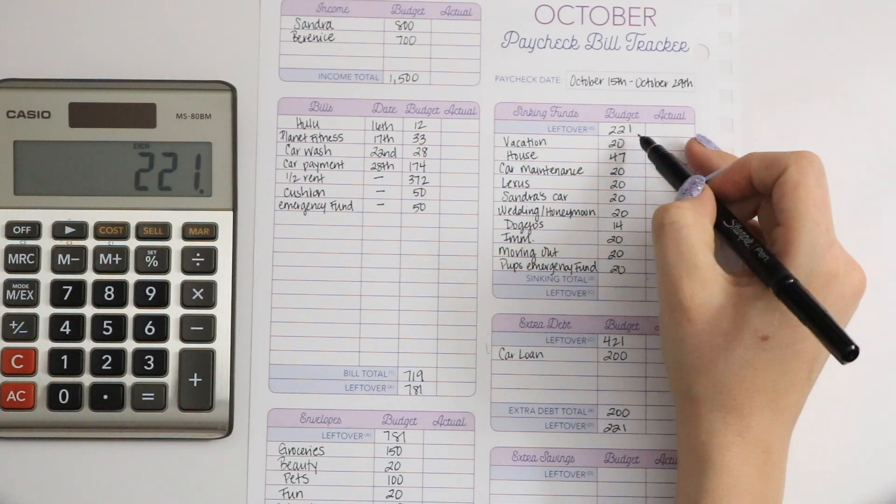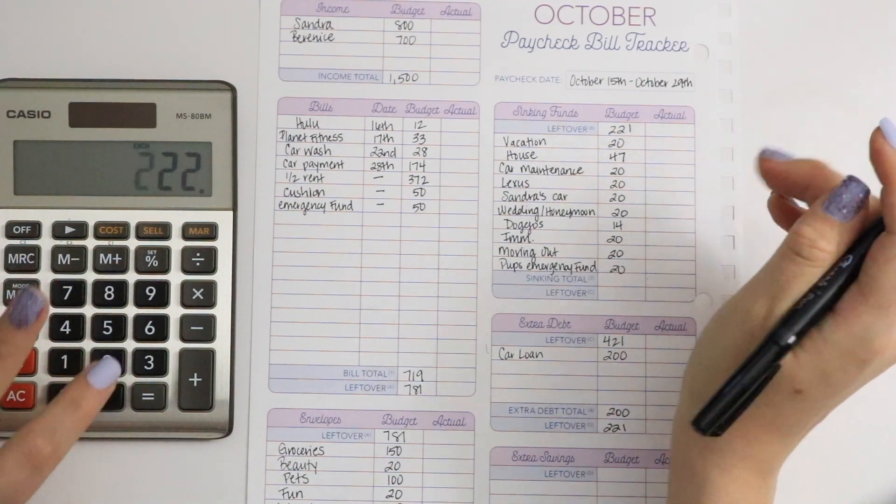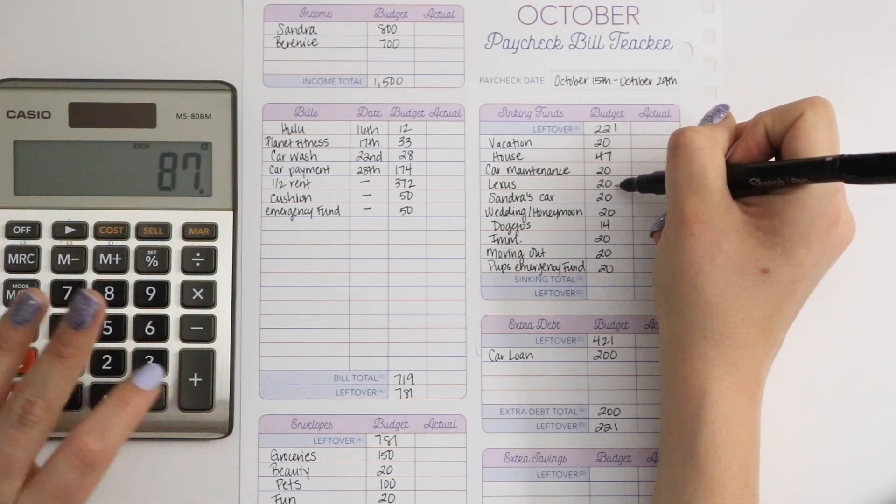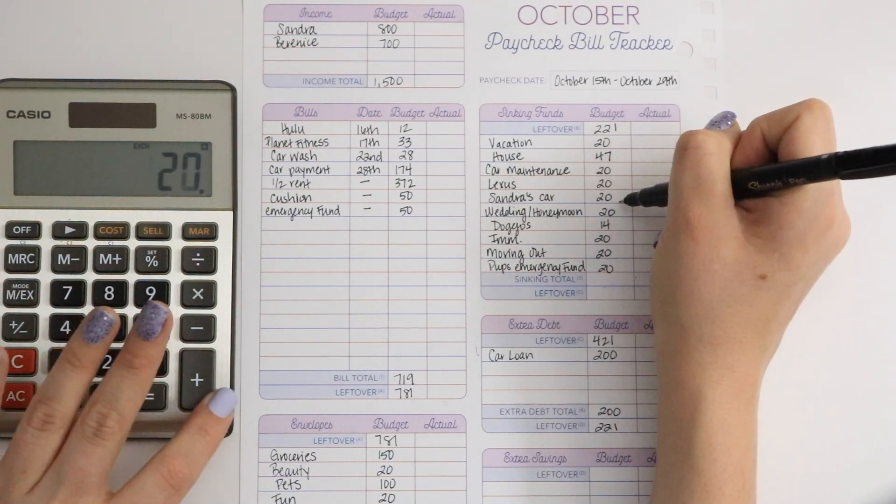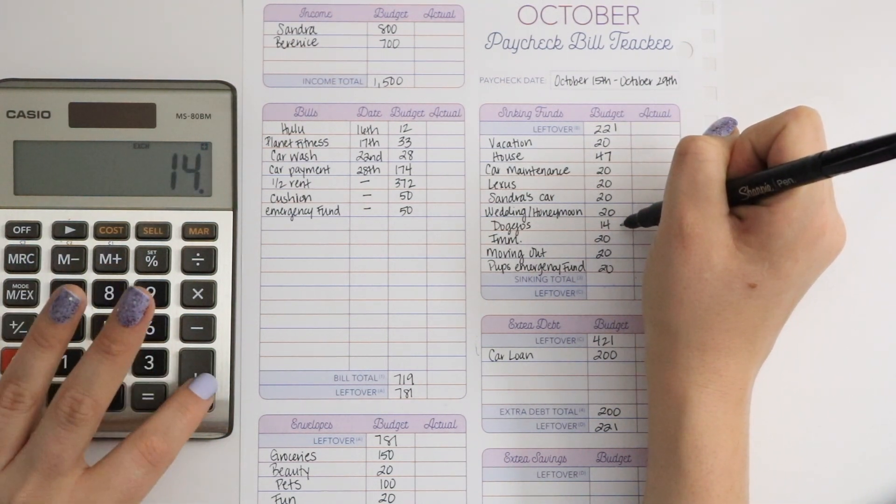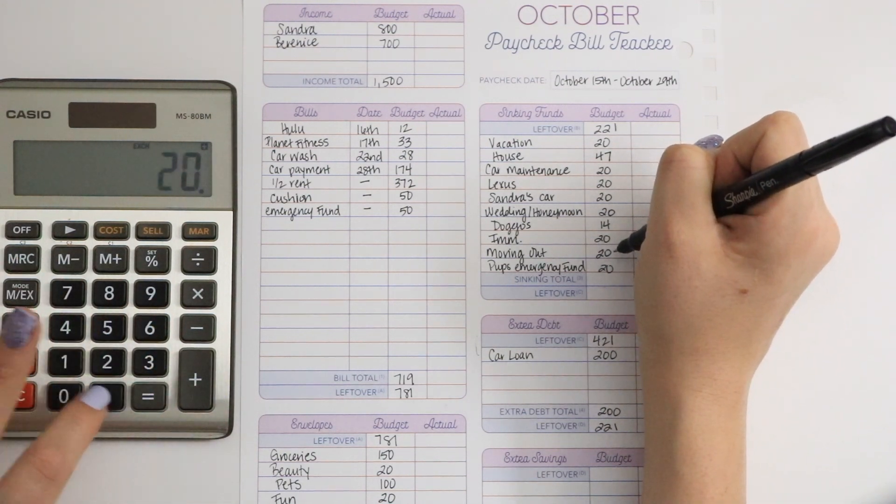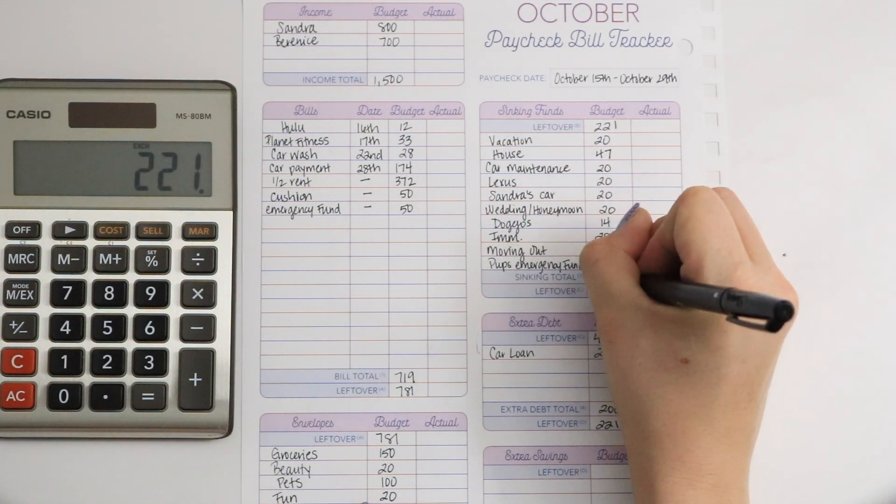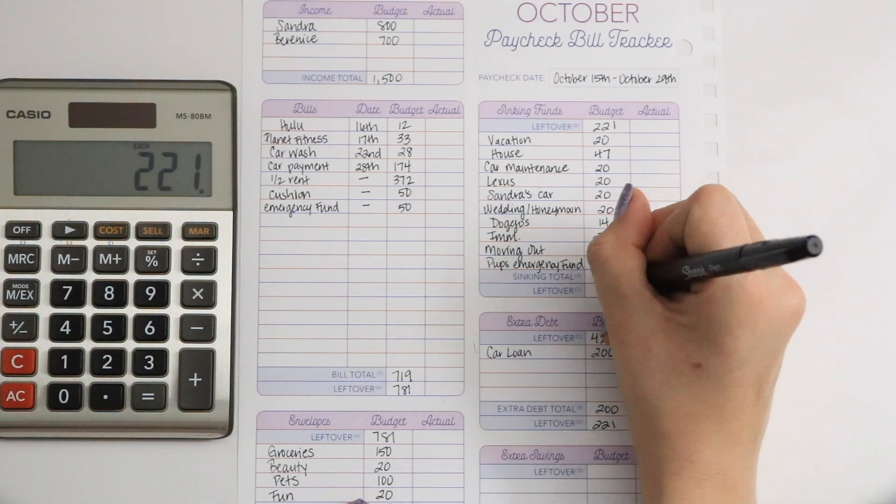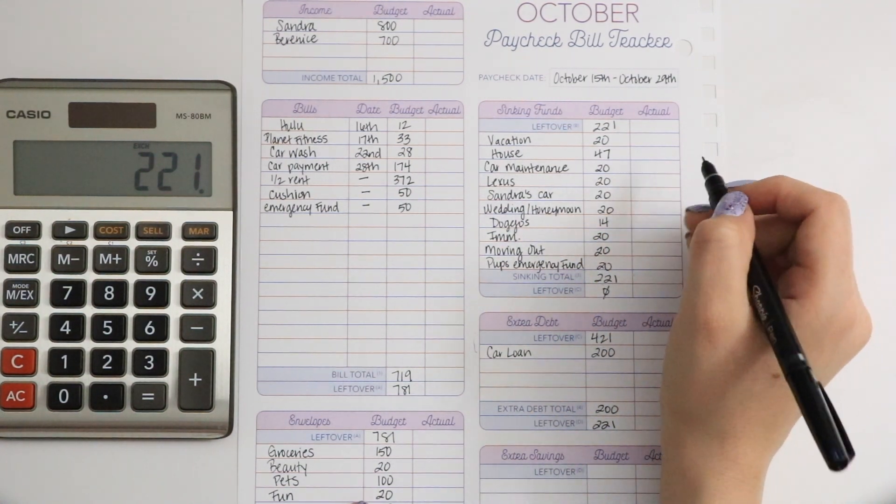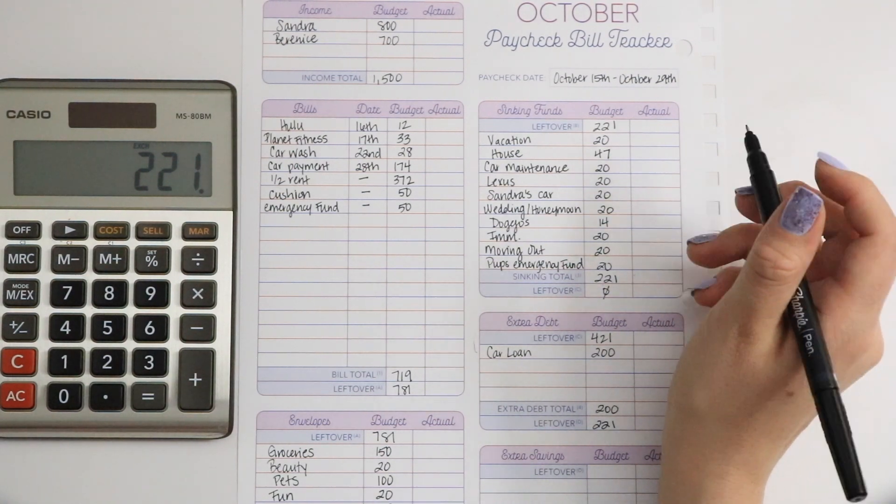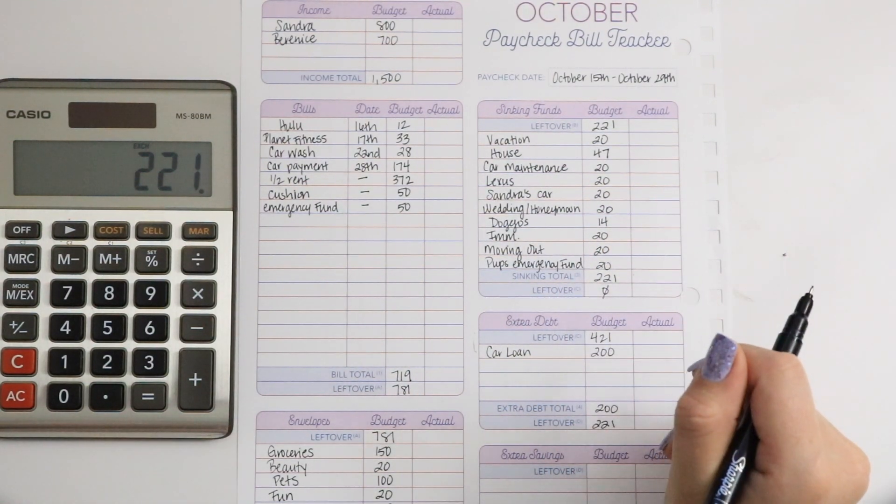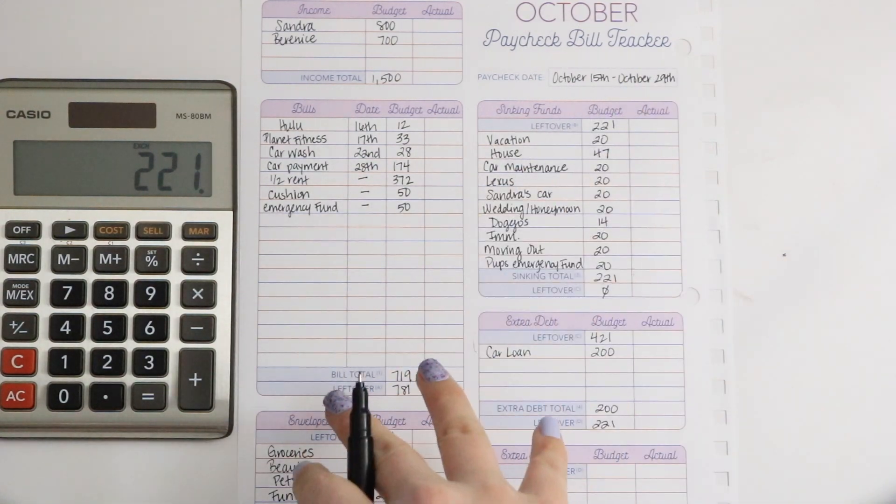Let's add all of our sinking funds. That comes to a total of $221. So it gives me a leftover of $0, which I do a zero-based budget so I know where every one of my dollars is going to. That makes me happy knowing that each dollar has its job, has its place.